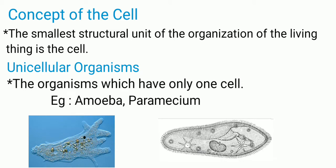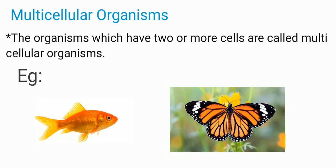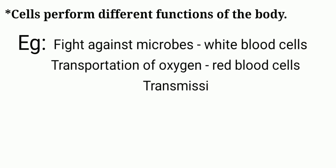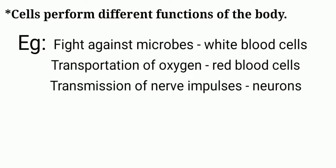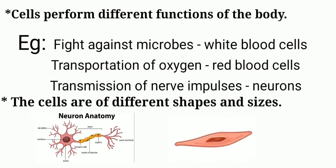Some organisms have only one cell; they are called unicellular organisms — for example, amoeba and paramecium. Organisms which have many cells are called multicellular organisms — for example, fish and butterfly. Cells perform different functions in the body: white blood cells fight against microbes, red blood cells transport oxygen, and neurons or nerve cells transmit nerve impulses.